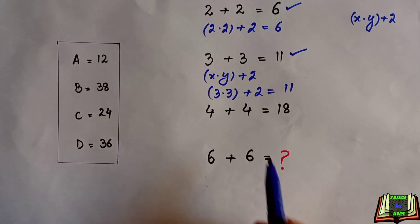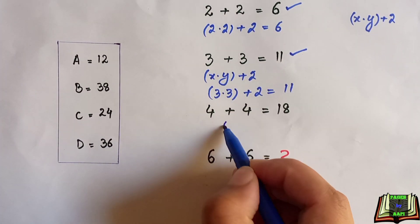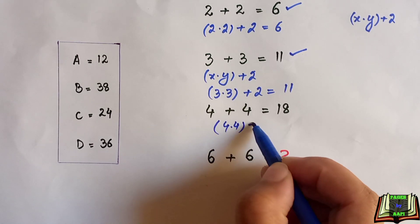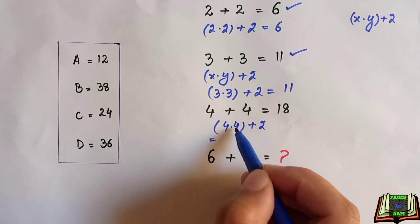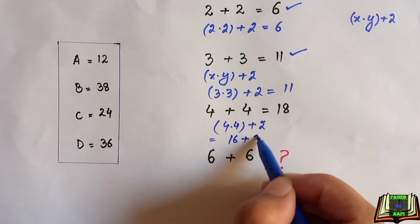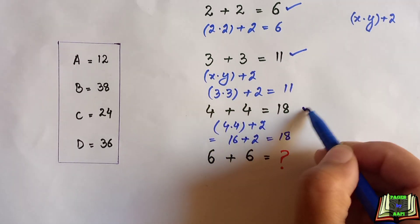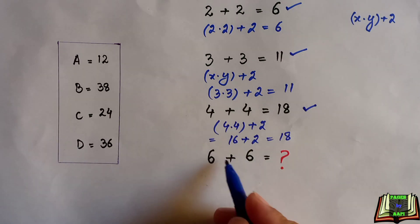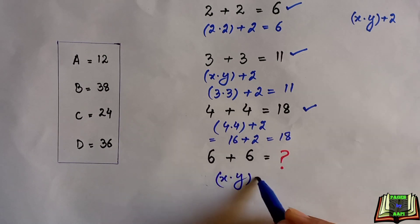Let's check the next one: 4 times 4 plus 2. We multiply the two values and then add 2. Four times 4 is 16, plus 2 equals 18. So the third number is also correct. Using the same pattern, we will now find the fourth one: x times y plus 2.